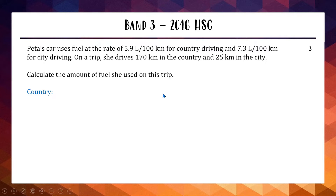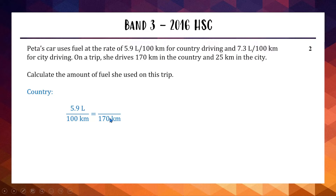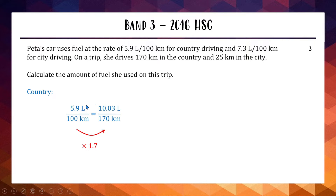Let's find our country liters first, then our city liters, and add them together. In the country we're using 5.9 liters per 100 km, but we're traveling 170 km. We set up our fractions: what multiplies 100 to get 170? You do 170 divided by 100 and get 1.7. So 100 times 1.7 equals 170, and because these fractions are equivalent, we multiply the top by 1.7 as well. 5.9 times 1.7 is 10.03 liters in the country.